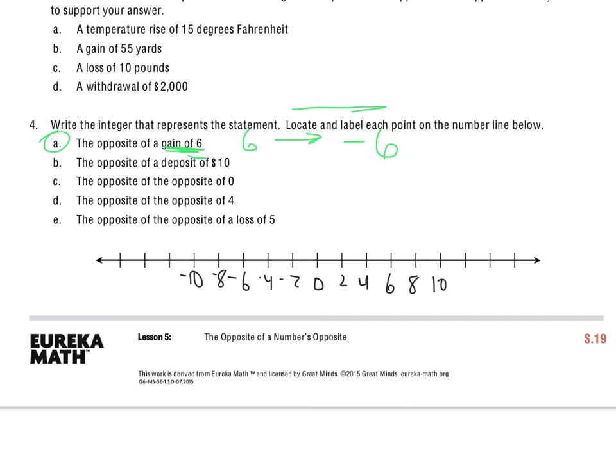But to go back to this one, I've got to plot the statement, the opposite of a gain of 6, which is, I know, negative 6. So I'm going to circle and plot right here at negative 6 and mark that A.